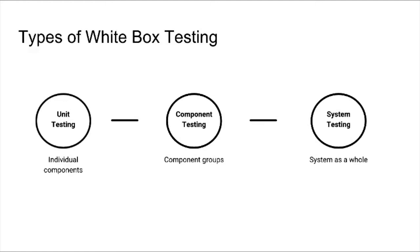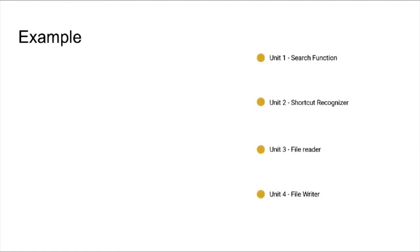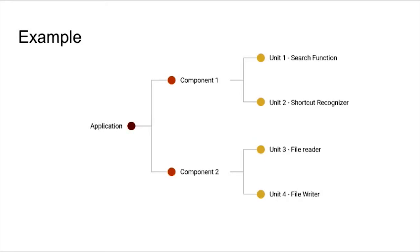Let's look at an example. Unit 1 is a search function that takes in the whole content of a file and a string to search in the content, and returns the position of the string in the content. Unit testing involves testing if the method fails when we pass null values or when the string is not in the file content. Unit 2 is a function that detects a keyboard shortcut being pressed and calls the appropriate function; unit testing involves pressing different keyboard buttons and checking if it is recognized. Unit 1 and 2 are integrated to Component 1. Component testing at this level involves pressing the keyboard shortcut that calls the search function of Unit 1, testing the interaction between Units 1 and 2. The components are then integrated to form a system — opening a file, pressing a shortcut that calls the search function, entering the string to search, and checking if the output returns the correct position of the string.